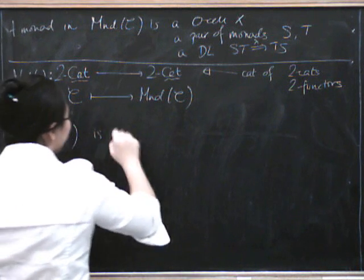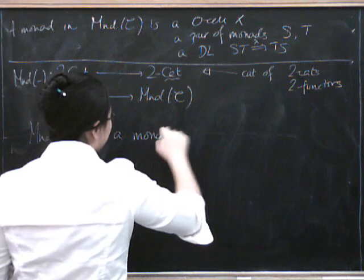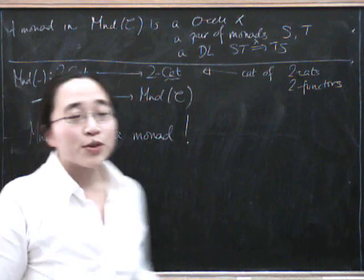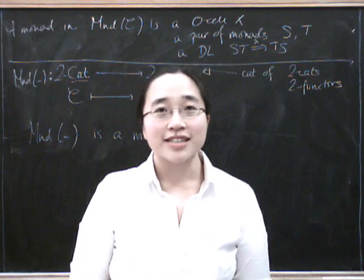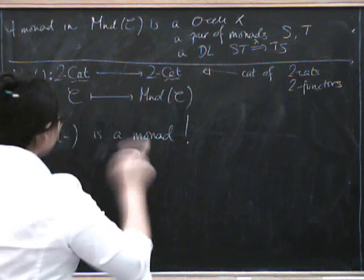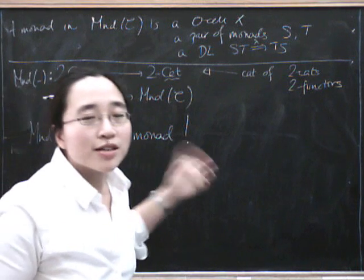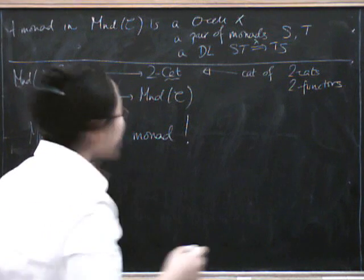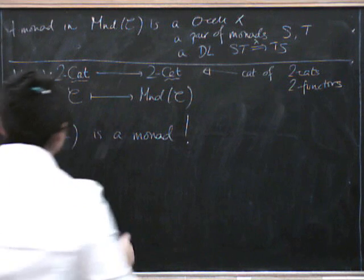Now, there are some people who think that I only like this because I like saying monad monad. They're obviously wrong. So, monad is a monad. What does it mean to be a monad? Well, you have to have a multiplication and a unit. And the really cool thing about this is, what is the multiplication here?